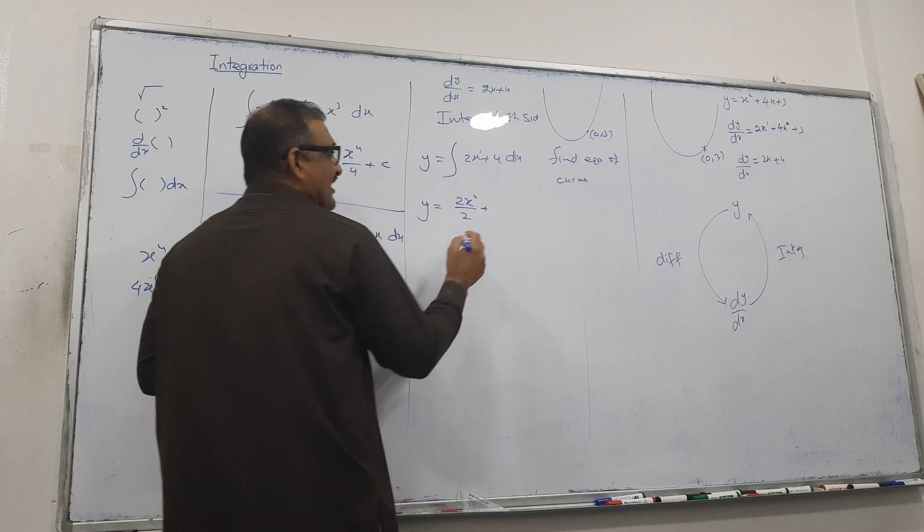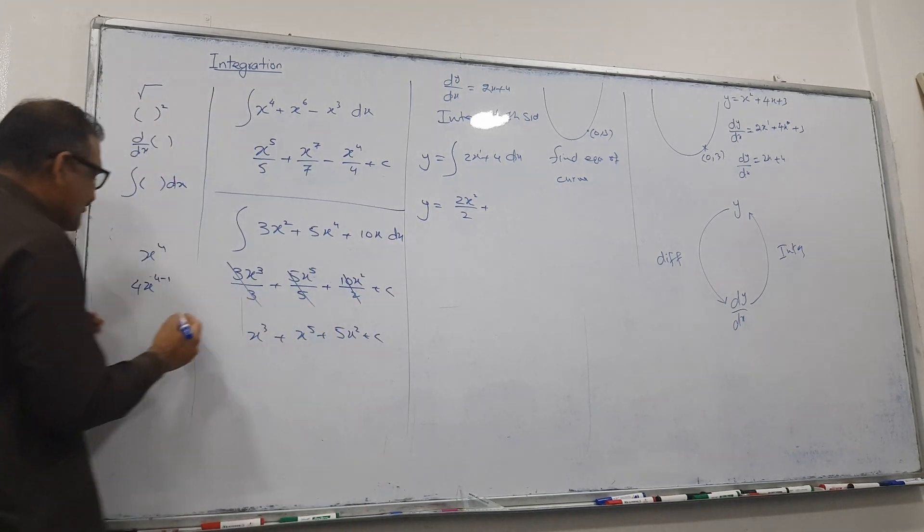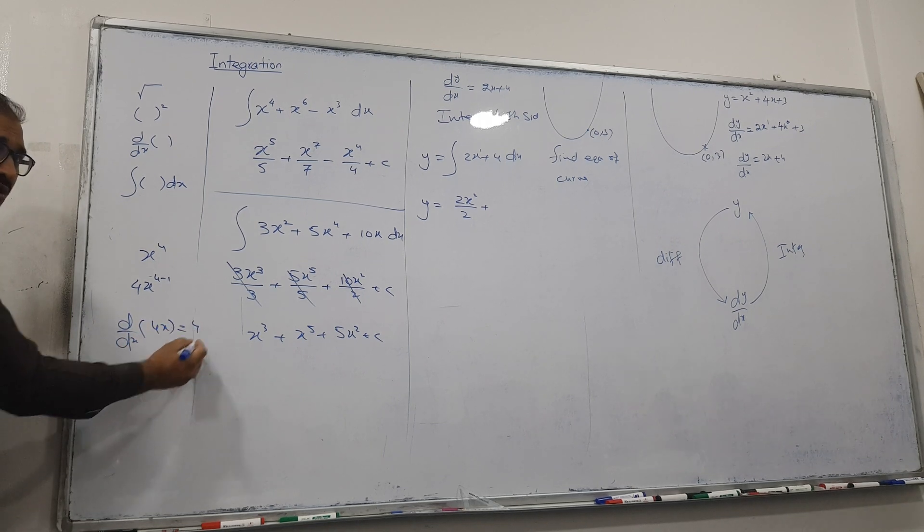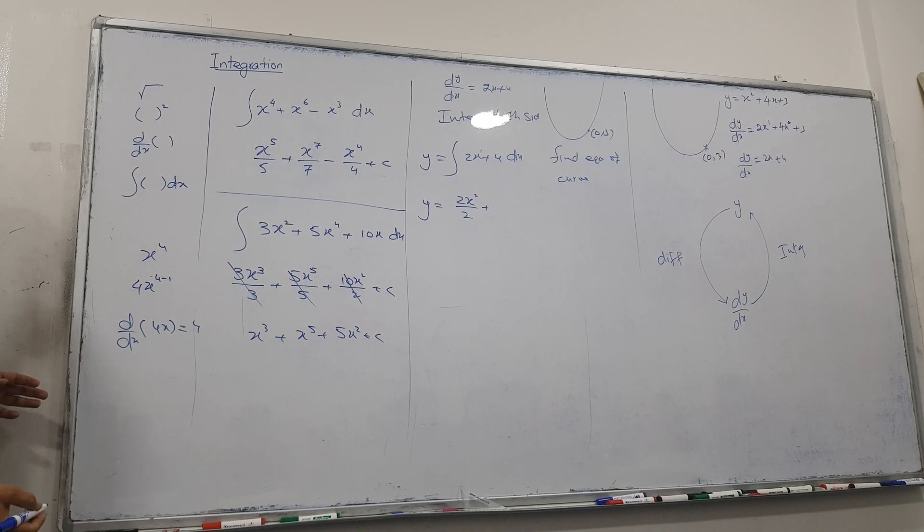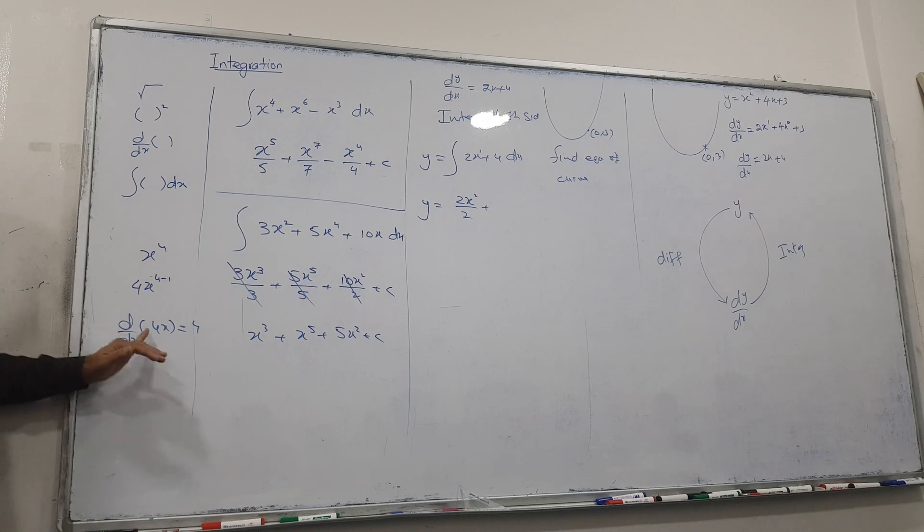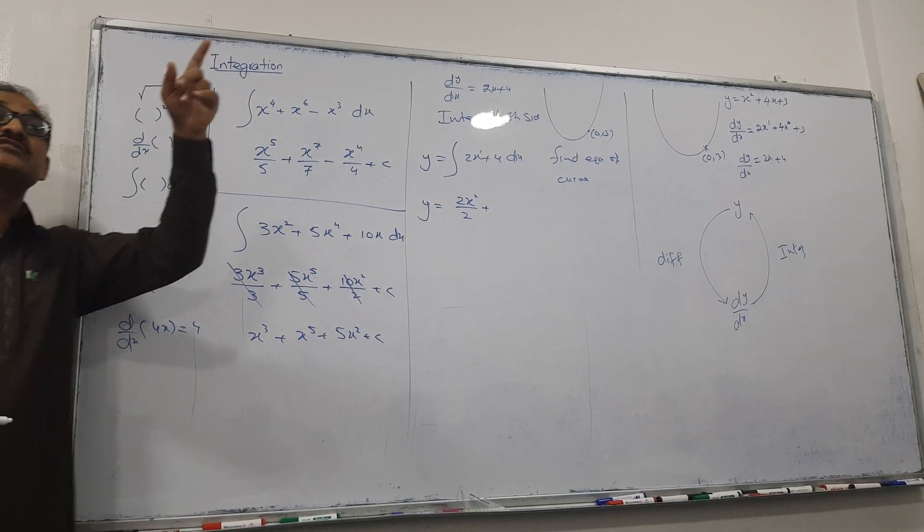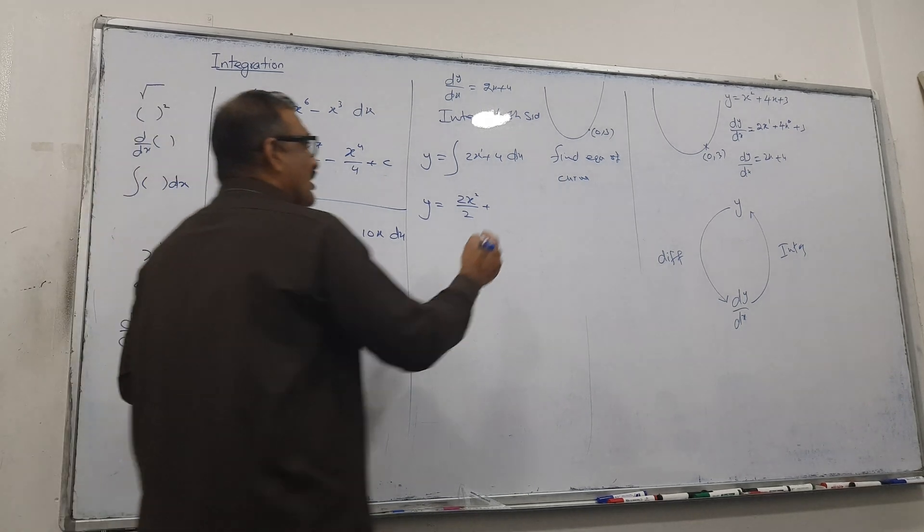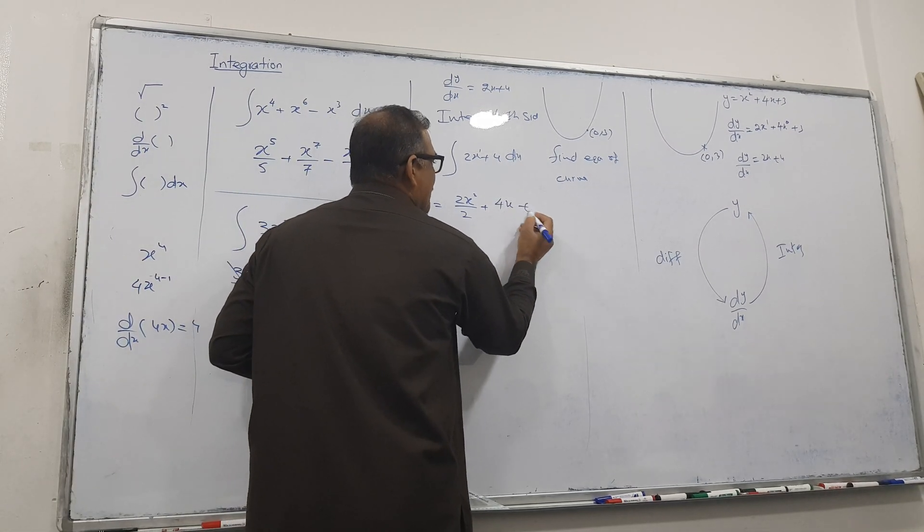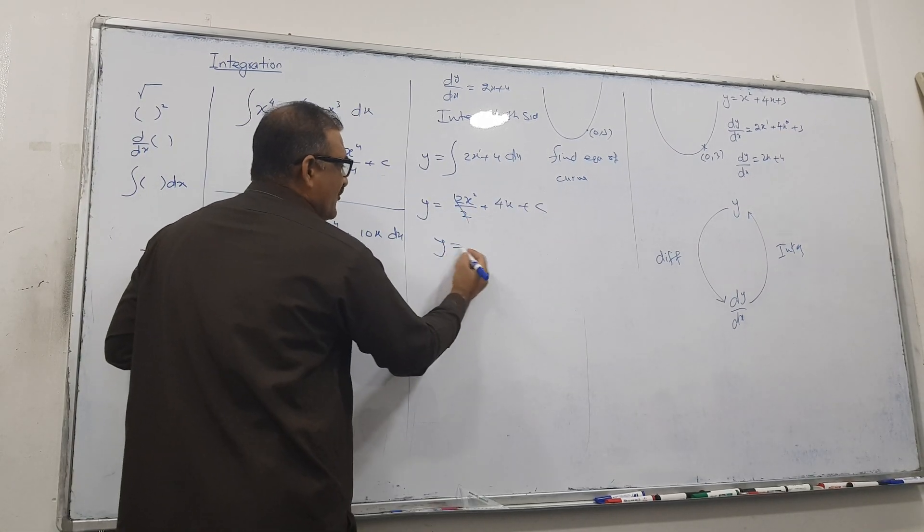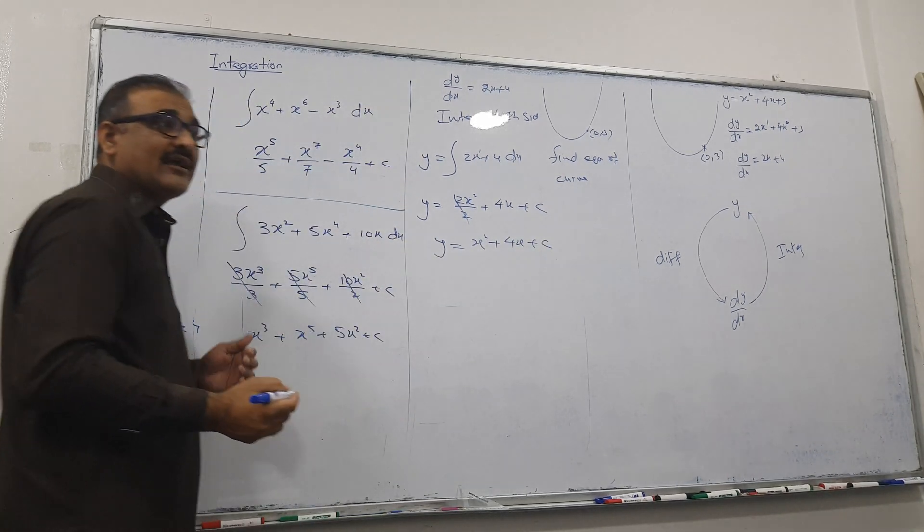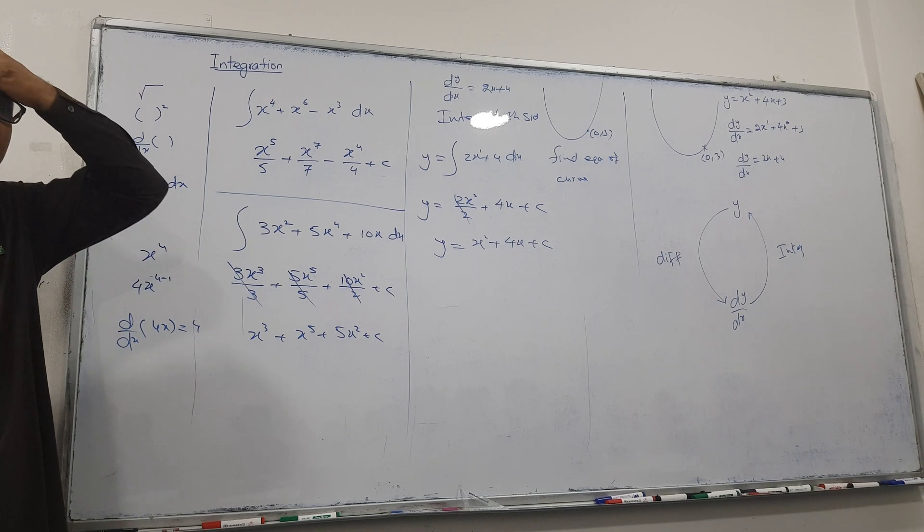Now interesting. For a while, my question: what is differentiation of 4x? 4. And what is the indication of 4? 4x. Repeat again. Derivative, differentiation of 4x is 4. And what is 4 indication? 4x. 4x. So I am writing here 4x and plus c is fixed. So I got y = x to power 2 plus 4x and plus c. Agreed or not agreed?